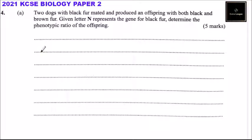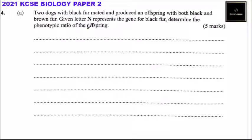Question number four, Part A. Two dogs of black fur mated and produced an offspring with both black and brown fur. Given that N represents the gene for black fur, determine the phenotypic ratio of the offspring.